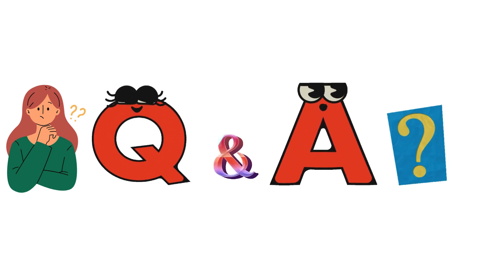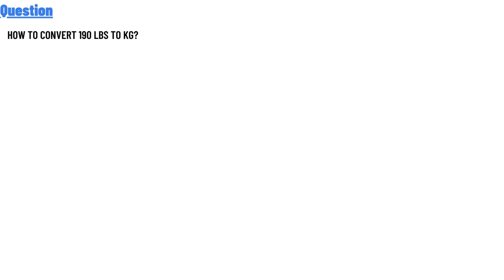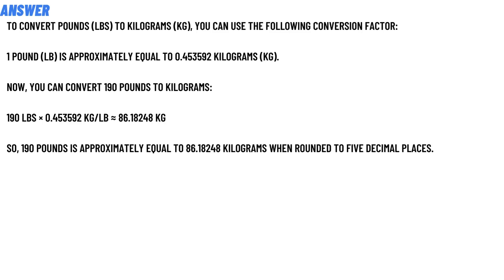Our question today is: how to convert 119 lbs to kg? To convert pounds to kilograms, you can use the following conversion factor: 1 lb is approximately equal to 0.453592 kg.